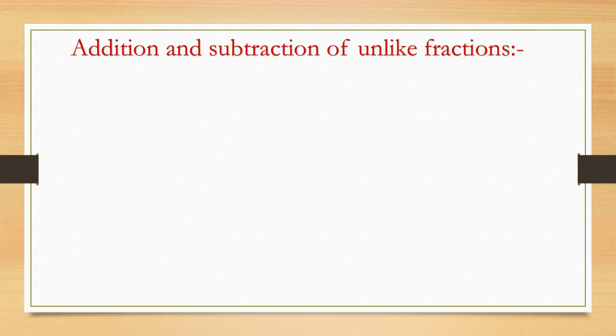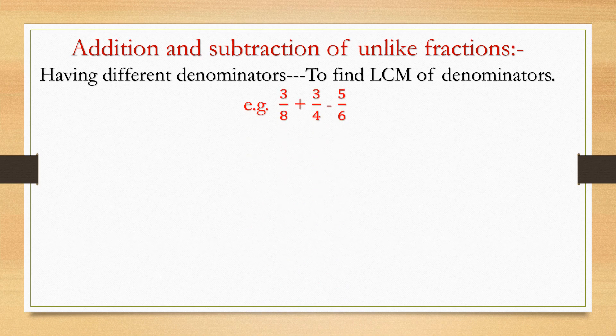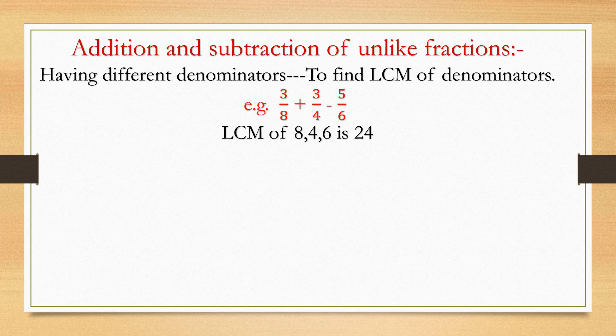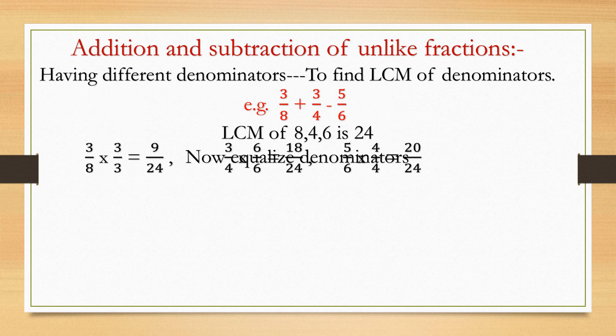The second part is addition and subtraction of unlike fractions — fractions with different denominators. When denominators are different, we need to find the LCM. I think you all remember this concept from 4th class. I will explain by taking the example: three by eight plus three by four minus five by six. These have different denominators: eight, four, and six. First, find the LCM of these denominators. The LCM comes out to be 24.